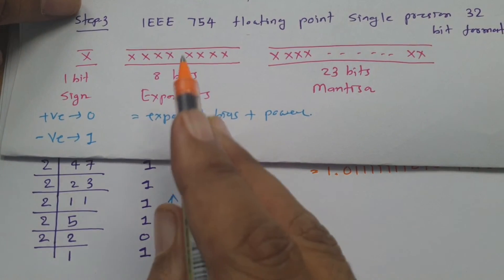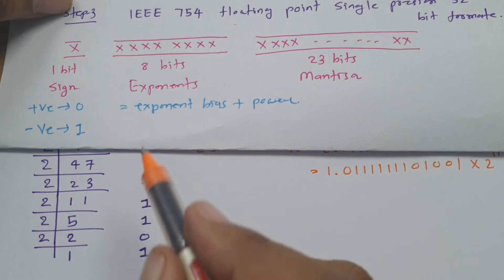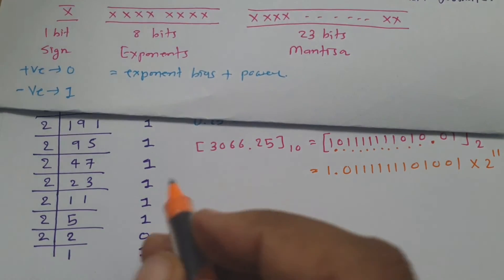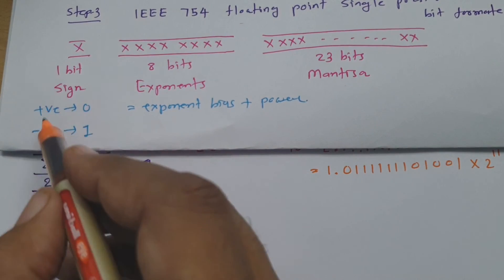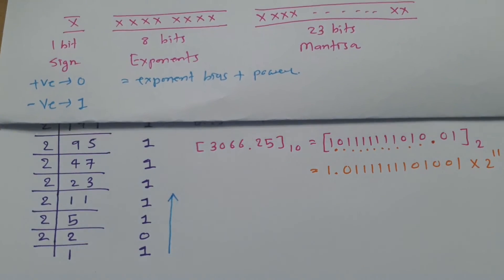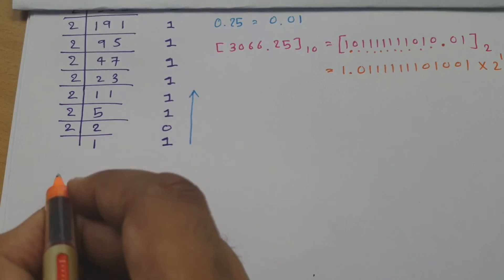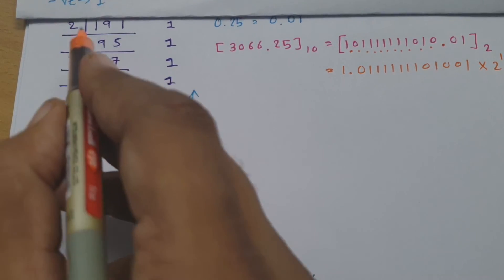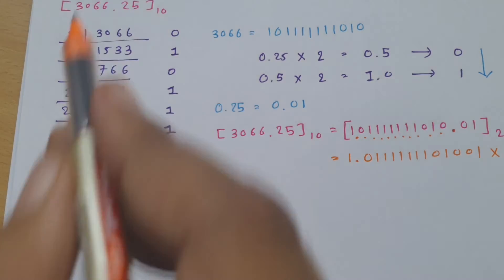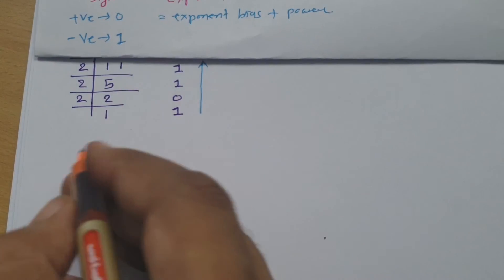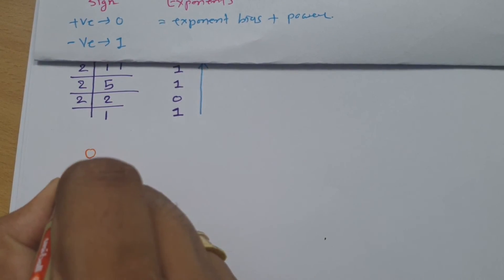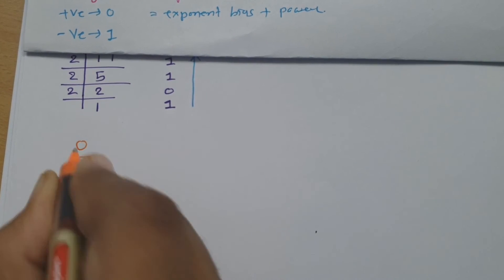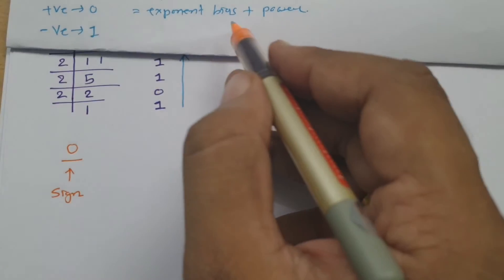Step three is to represent the number in IEEE 754 format. The first bit is the sign bit. Since the given number is positive, the sign bit is 0.